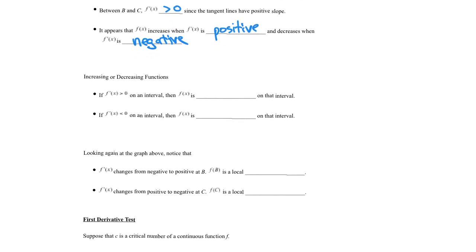If the derivative is positive on an interval, that means the tangent line has a positive slope, so on that interval the function f of x is increasing. And where the derivative is negative — if f prime of x is less than 0 on an interval — then f of x, the function itself, is decreasing on that interval.